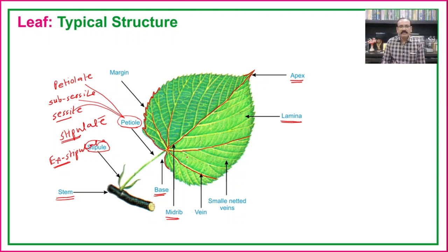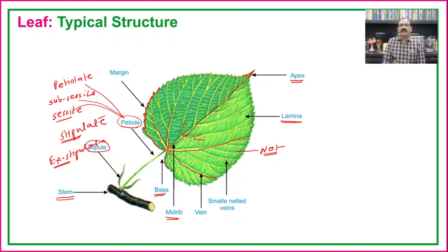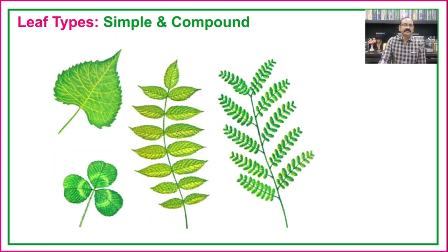From the midrib there is development of laterals of the primary order, then laterals of the secondary order, tertiary order, and so on. In this way there is formation of a net-like structure in dicotyledons, known as reticulate venation. If it is a monocot, the type of venation will be parallel; if it is a dicot, the venation will be reticulate.